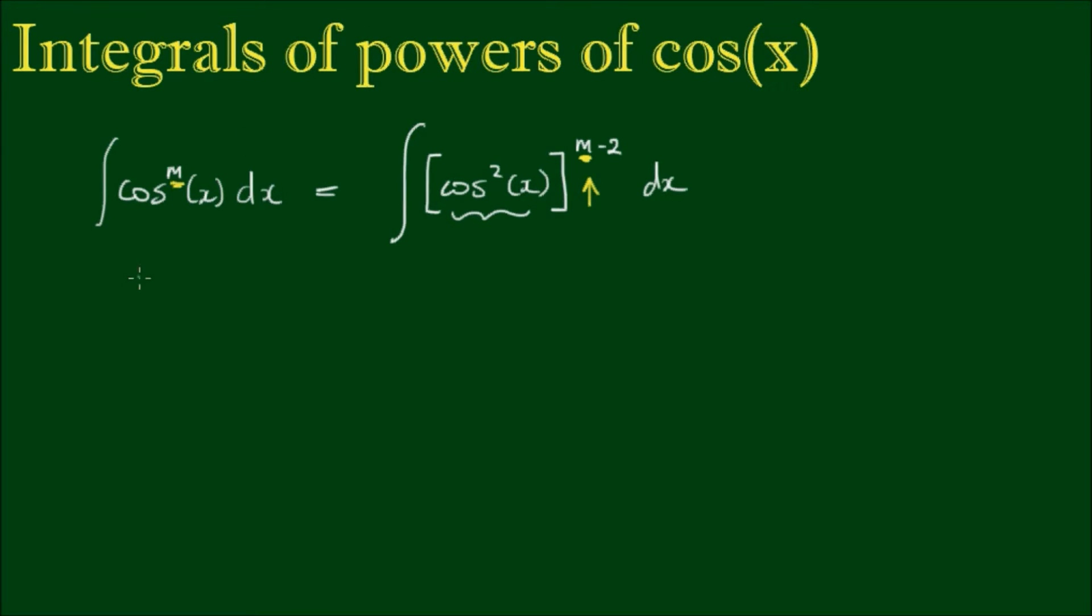The goal is to write cosine to the mth power as a series, so we have a constant times cosine to the mth multiple of x plus another constant by cosine to the m minus 2 multiple of x and so on. But applying the half-angle formula multiple times can be hard work. So is there a better way?